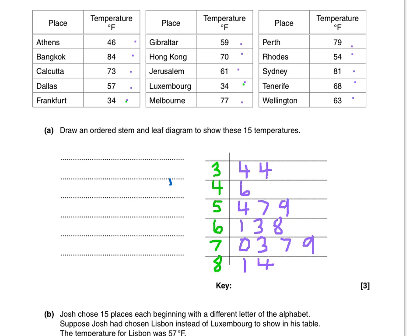I went through the numbers in the thirties, which are 34 and 34, and wrote in a four to represent 34 and another four to represent 34 again. Then for the forties, the only number is 46, so I placed a six next to the four.